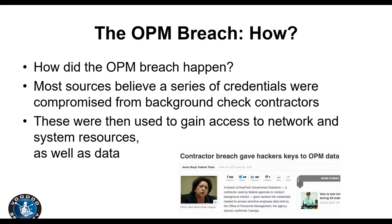How did the OPM breach happen? Enough transparency emerged for the security industry to learn from it. What is believed to have happened was a credential hijack of a background check contractor, which gave attackers initial ingress access. This was a hybrid connectivity scenario with privileged access — attackers came in through that access, gained system resources, and stole the data. Attribution to a state actor remains uncertain, but the key point is it wasn't that sophisticated: they had remote access and leveraged privileged access.